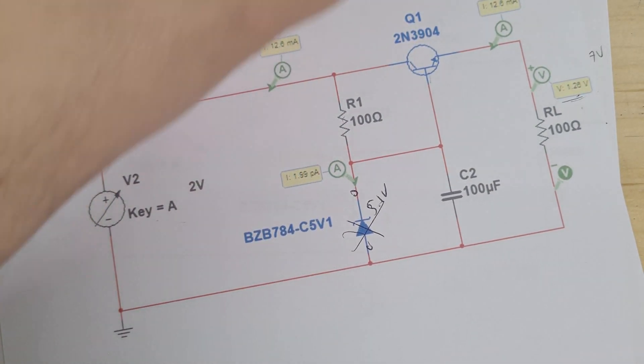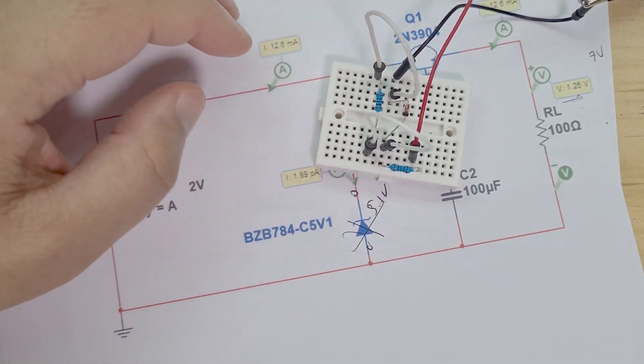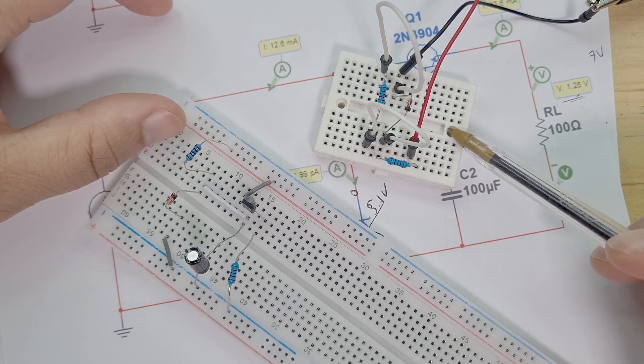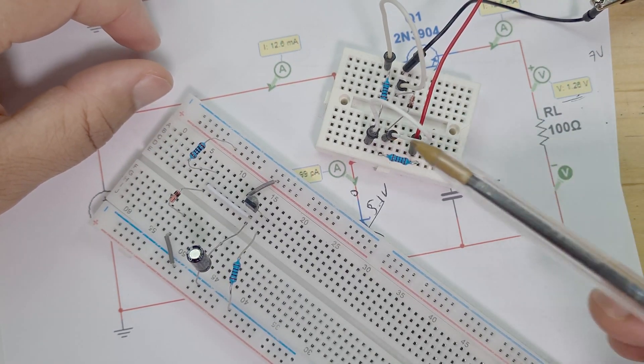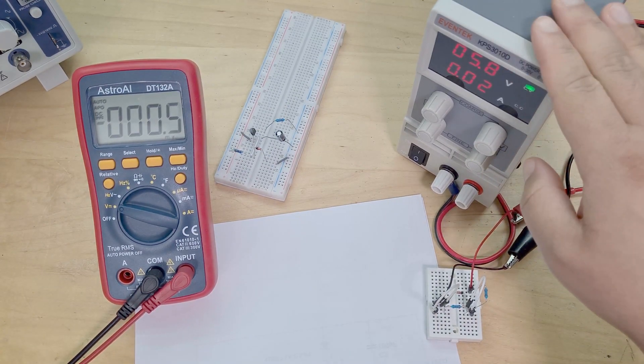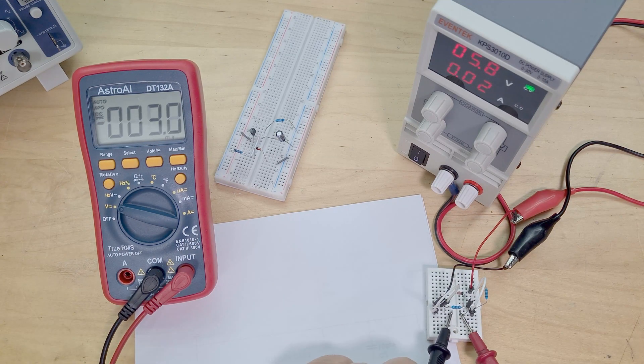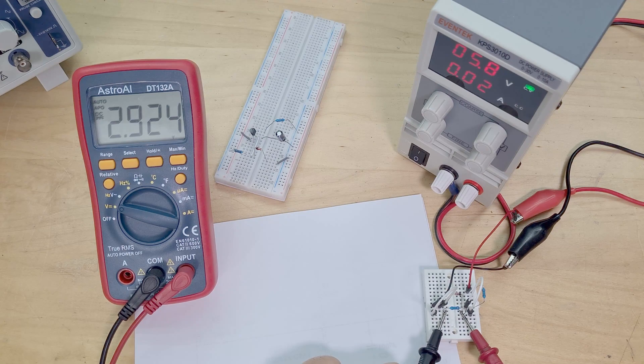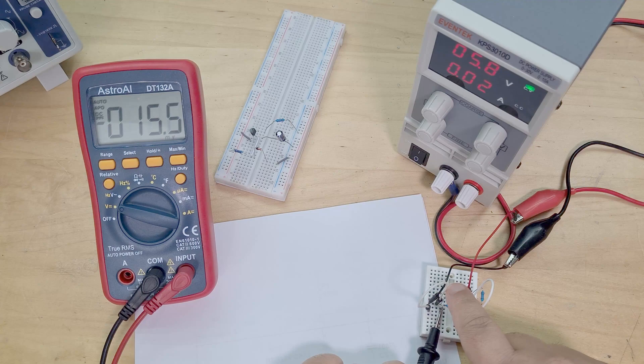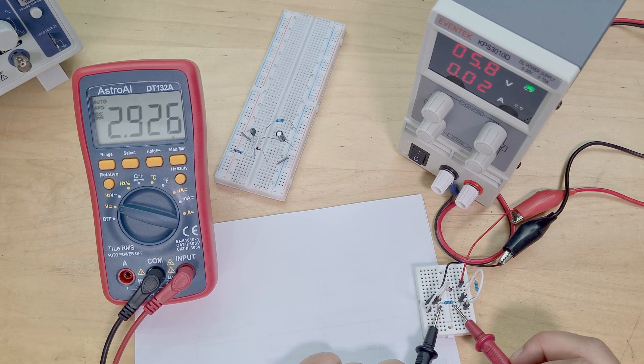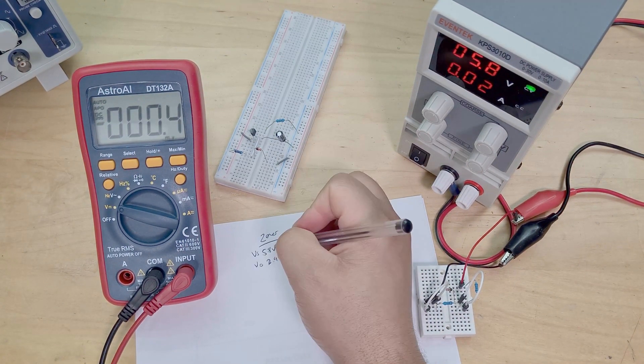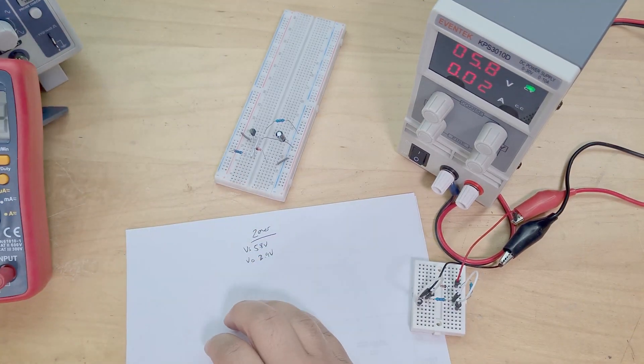So let's jump onto the breadboards now and just show you. So here is our transistor Zener voltage regulator and here's just our Zener voltage regulator. Let me first show you with the same exact inputs what we get out of the output on this one first and then with the added transistor. All right so here we've got 5.8 volts at our V supply. Let's just check our voltage across our load resistor. We've got 2.9 volts at only 5.8 volts. So that's not very good. That's basically not working at that voltage, 5.8 volts.